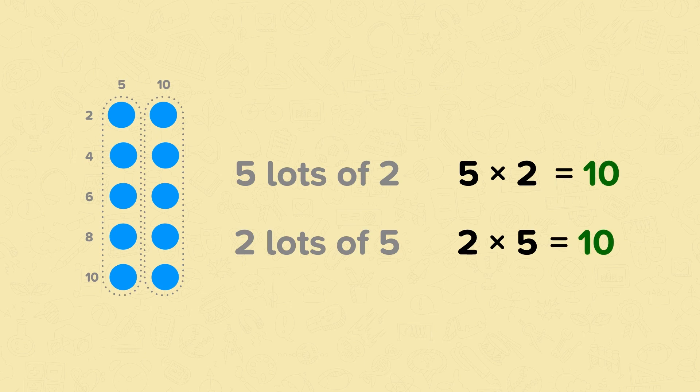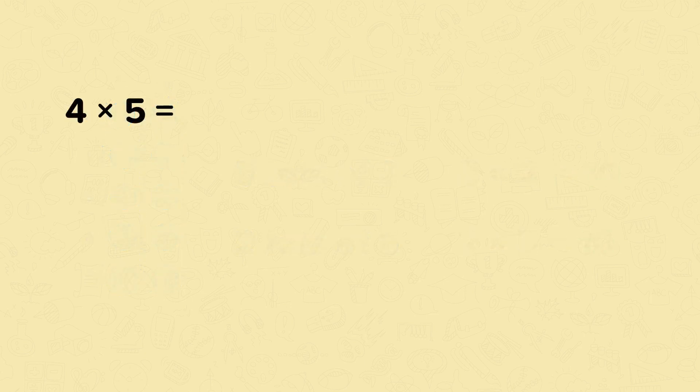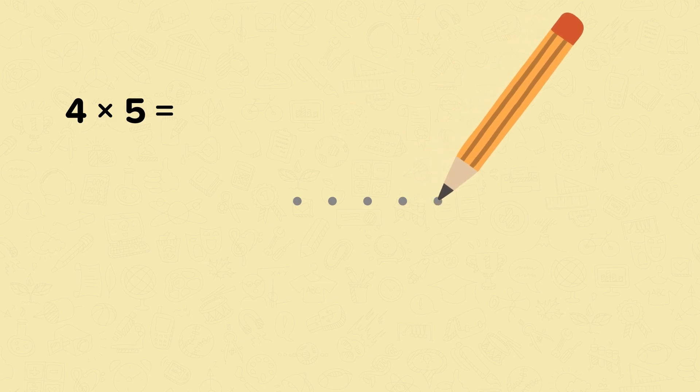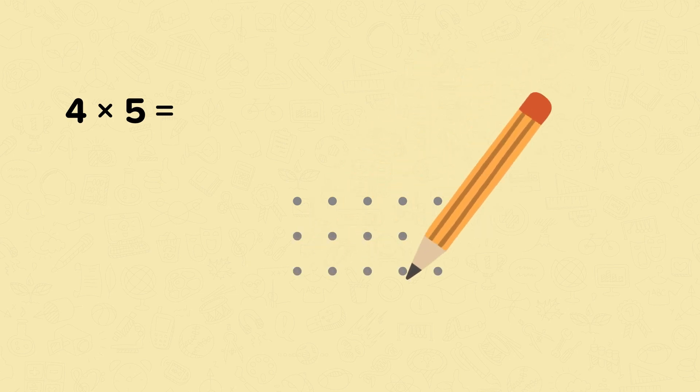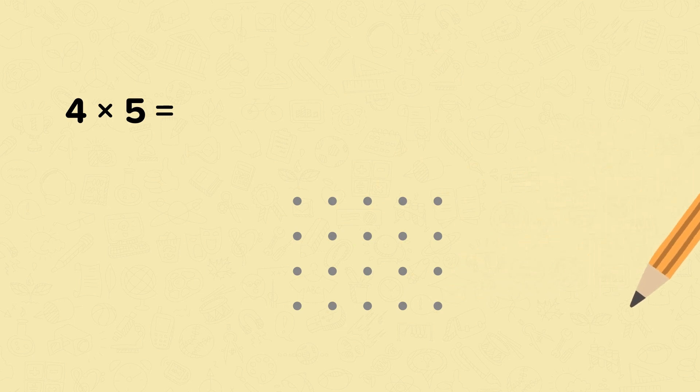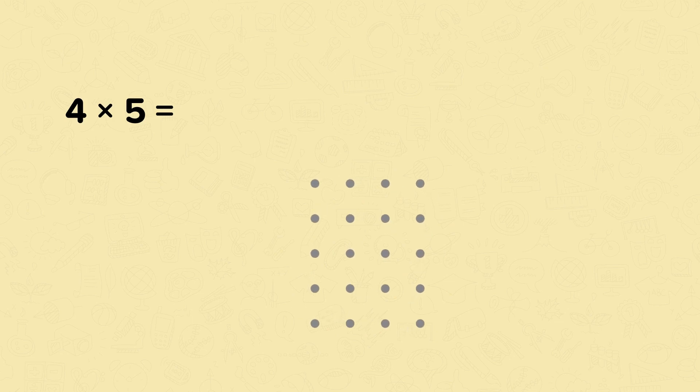If you're trying to solve a multiplication calculation and you don't already have an array to help you, you can draw one. Let's look at this calculation: 4 times 5. To help calculate this, you can draw an array. Here we need 4 rows of 5. This is the first row. Now we need 4 more. Let's speed things up a little. You could also draw the array like this. Here we have 4 vertical groups of 5. Now we just need to count the dots.